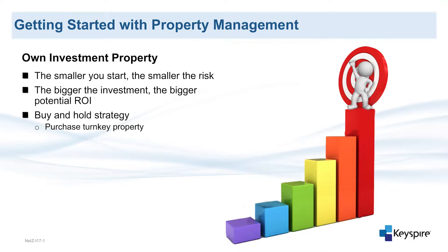One strategy that you may choose to use for your first buy and hold is to purchase a turnkey property that is already tenant-occupied. This means that the property is already rented, and you just take over the lease as the new owner. You start collecting the rent right away, so it is a very easy transition. However, remember that when you purchase a turnkey property, you are purchasing a property that has all of the work already done — so you won't have to perform renovations, advertise the property, or screen tenants, which means less work for you, but you often pay more to purchase this type of property.